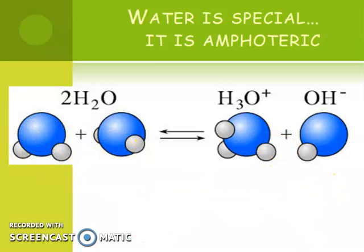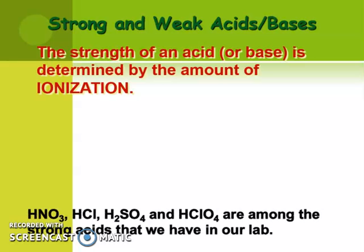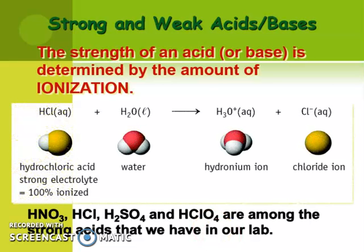How do you determine whether something is a strong or weak acid or base? It depends on the amount of ionization. Typical strong acids we use in lab include nitric acid, hydrochloric acid, sulfuric acid, and chlorous acid. Since HCl is a strong acid, its identity determines its strength — I wouldn't ever expect you to memorize which ones are strong or weak.